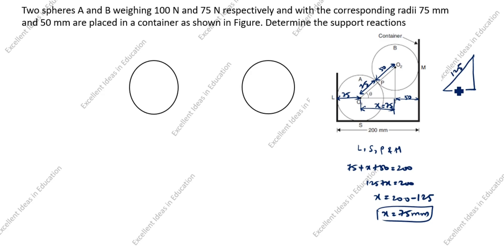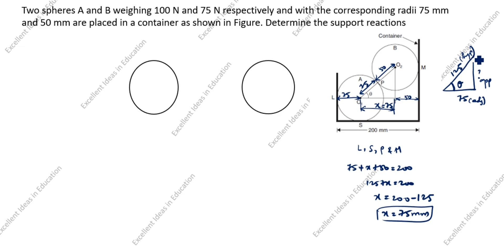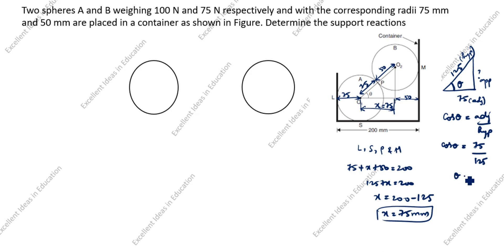We need to find the theta value. The opposite side, the adjacent side, and the hypotenuse are identified. We know the adjacent and hypotenuse values. The formula we need is: cos theta equals adjacent divided by hypotenuse. Cos theta equals 75 divided by 125, so theta equals 53 degrees.